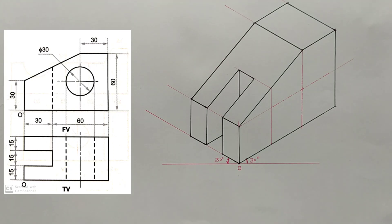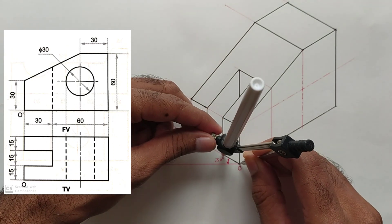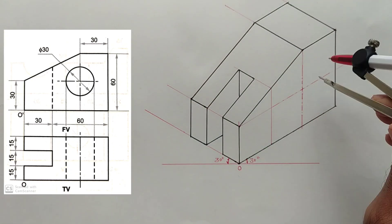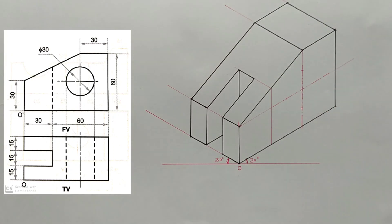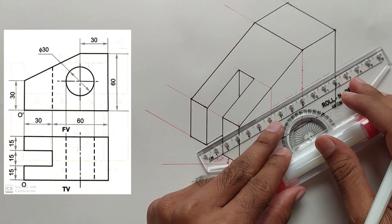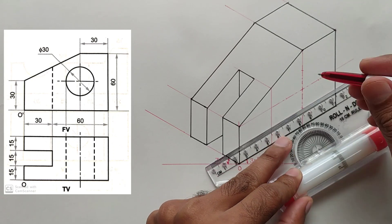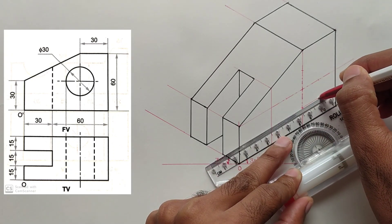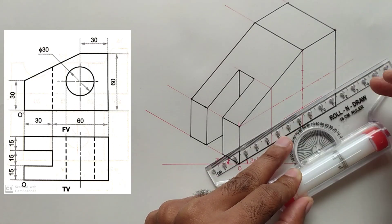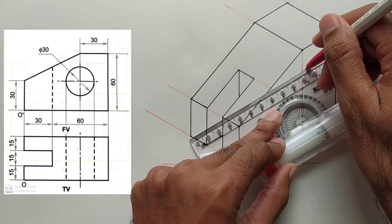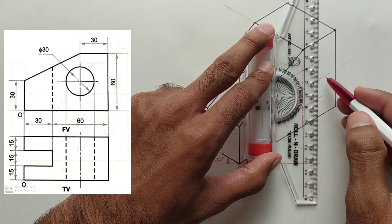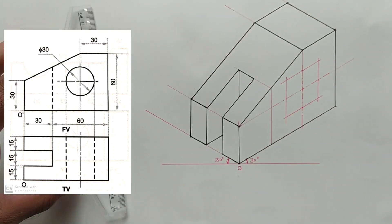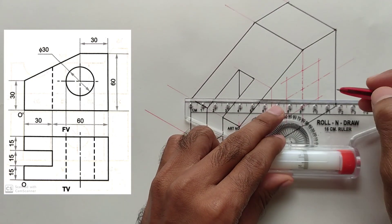In order to draw this isometric circle, we first have to construct an isometric square. The side of the isometric square is 30 millimeters, because the diameter of the circle is 30 millimeters.